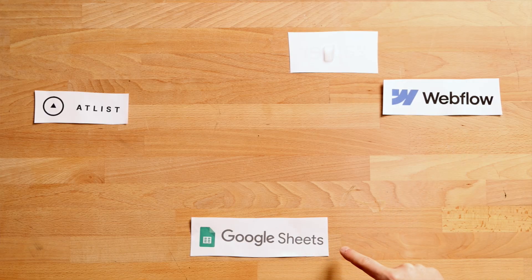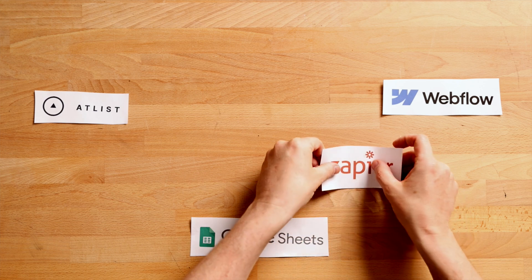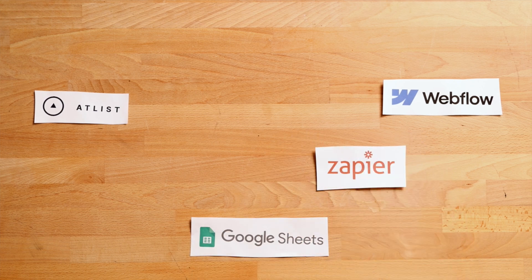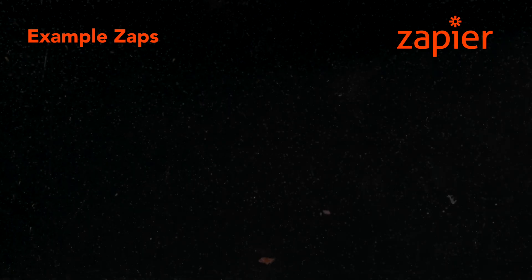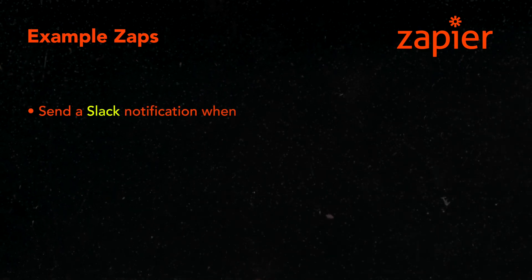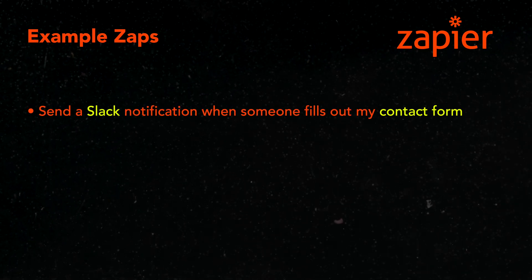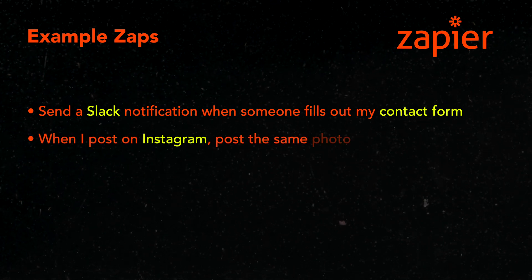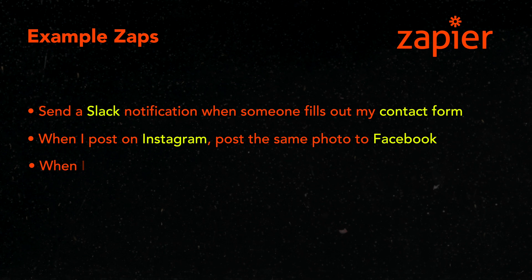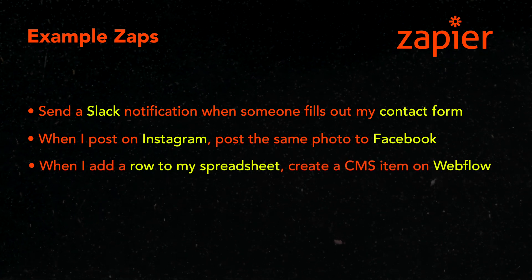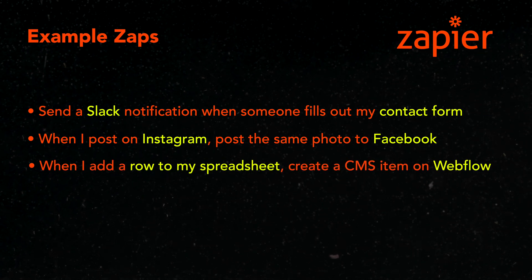We actually need a tool in between Google Sheets and Webflow that lets them talk to each other, and that tool is Zapier. Zapier lets you create zaps, which are automations between tools. For example: send a Slack notification when someone fills out a contact form, or when you post on Instagram, post the same photo to Facebook. In our case, our zap will be: when I add a row to my spreadsheet, create a CMS item in Webflow.